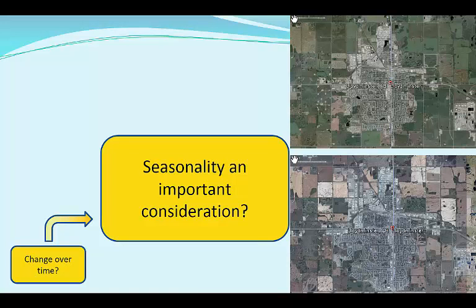If your focus is on changes in forest or other vegetation in a temperate climate, make sure you take the seasons into consideration from the outset. Not doing so could easily lead you to conclude that there has been significant forest loss, when in fact you are primarily detecting differences between spring and summer greenness or canopy cover. In vegetation studies, it is crucial to select images from as close to the same date each year as you can. In my study, I anticipate that differences between newly urbanized areas and farmland will be much easier to detect, with strong contrasts between vegetated and non-vegetated areas, so I've narrowed my search to summer scenes only.